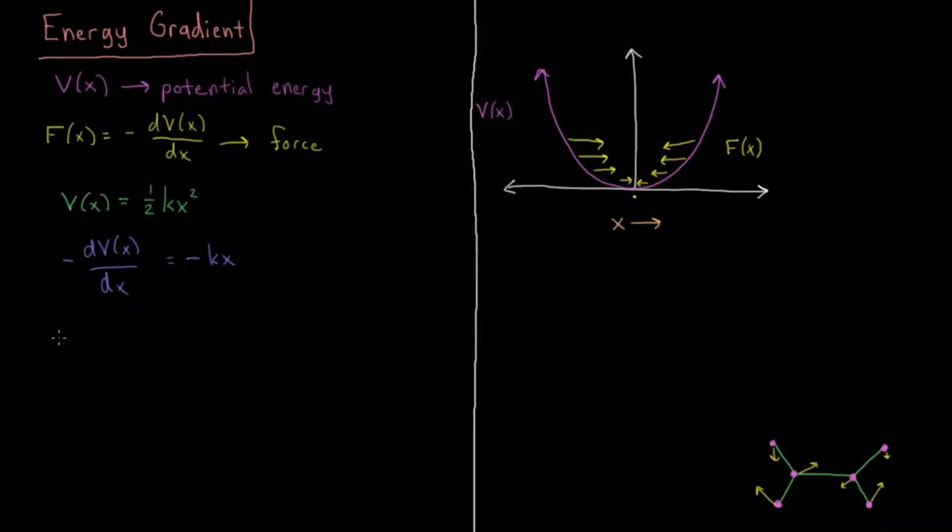What if we go to three dimensions? So in 3D, our V will be V of x, y, z.